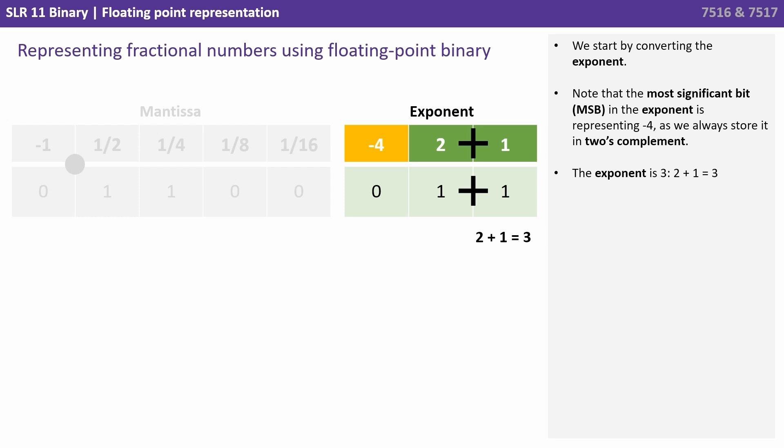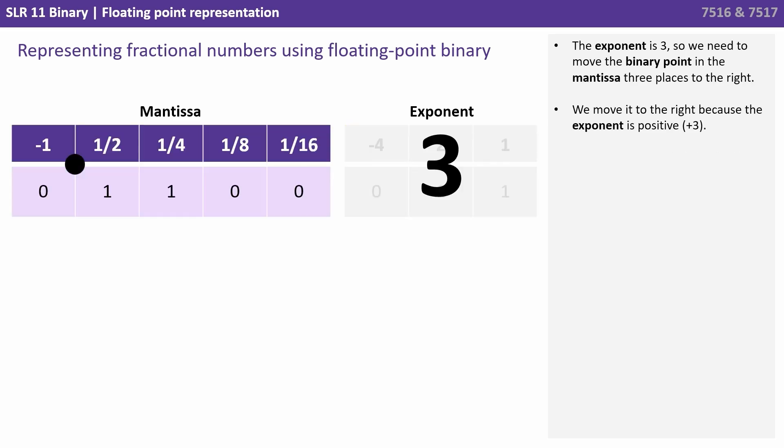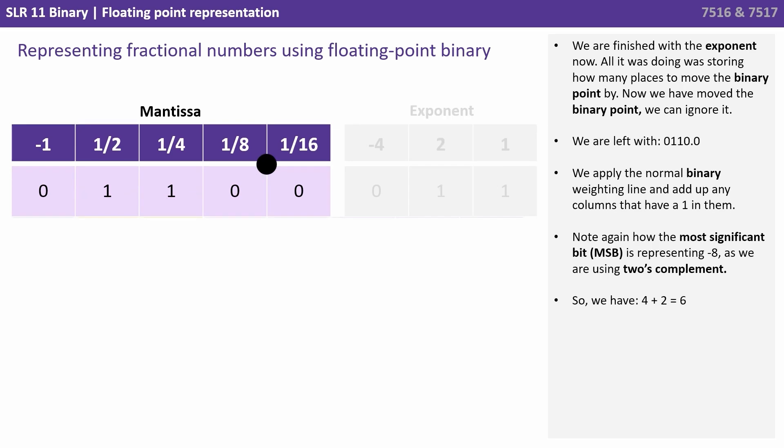So we start by converting the exponent. Now note the most significant bit in the exponent is representing minus 4 as we store it in 2's complement, so the exponent here is 2 plus 1 equals 3. The exponent is 3, so we need to move the binary point of the mantissa three places to the right. We move it to the right because the exponent is positive 3. We are finished with the exponent now. All it was doing was storing how many places to move the binary point.